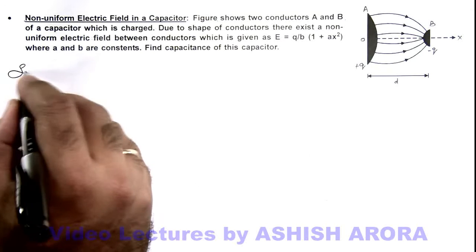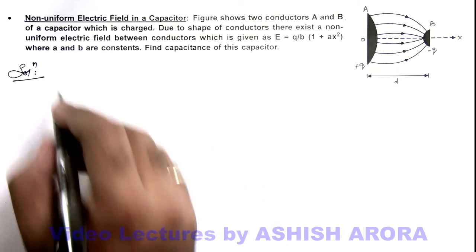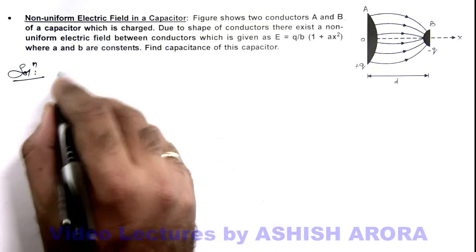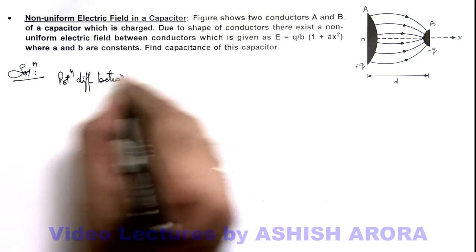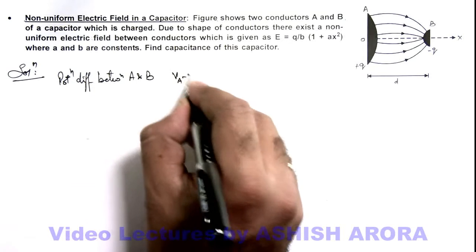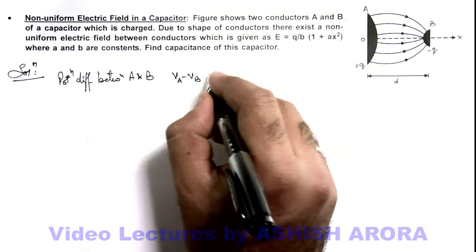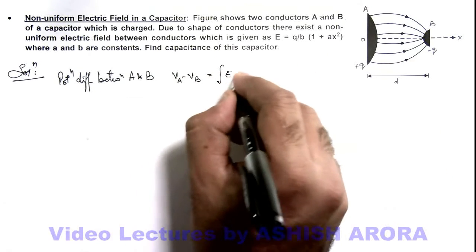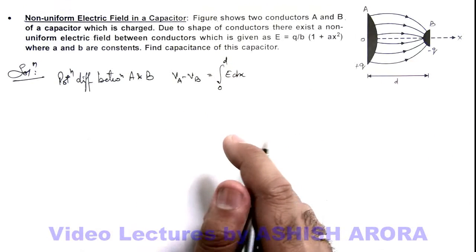Now in this situation, to find the capacitance we can first find out the potential difference between the two conductors, which can be calculated as the potential difference between A and B given as V_A minus V_B. As the field exists from left to right, A will be at higher potential. This is the integration of E dx from zero to d, as the separation between the two conductors is taken as d.